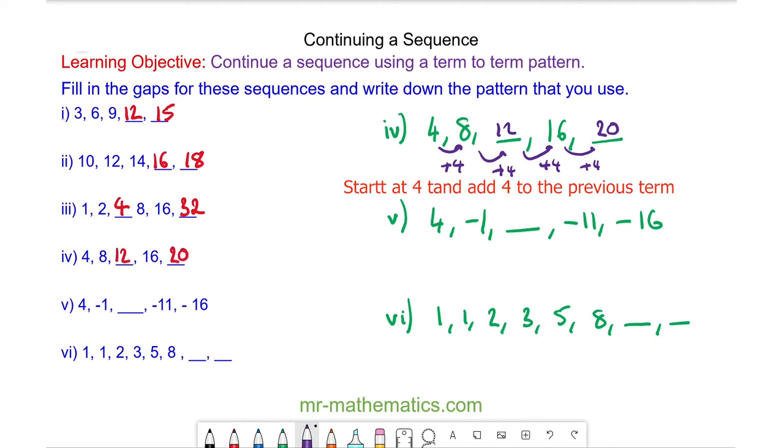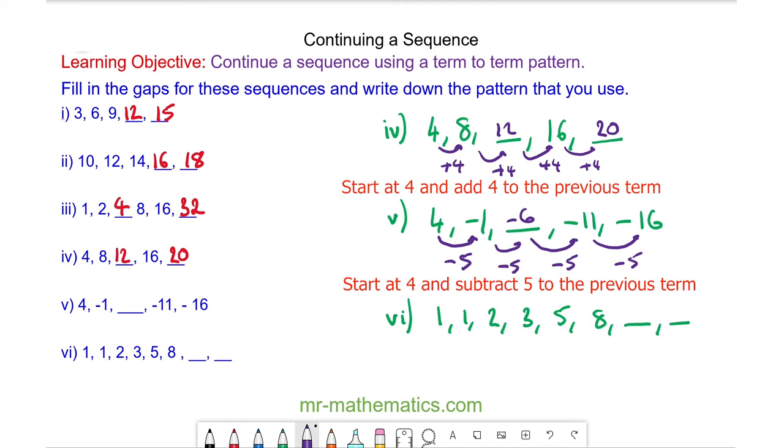For question five, we start at 4 and we take away 5 to make negative 1. We take away 5 again to make negative 6, and again to make negative 11, and again to make negative 16. So our term to term rule is we start at 4 and subtract 5 each time.